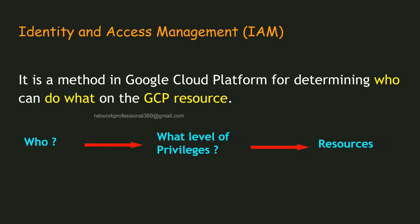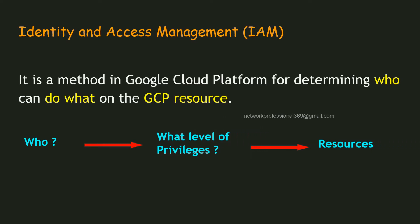For determining who can do what on the GCP resources. Now, if you look at who — say for example, any person. If we look at a number of users, there may be another person, maybe Shiva. If you look at what level of privileges are there, as like read or write access, or create a project, or delete access — defining the set of permissions.